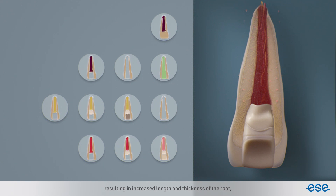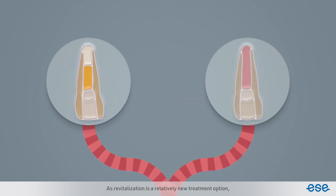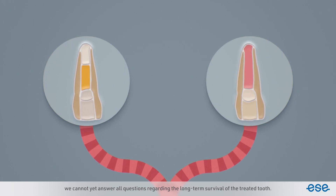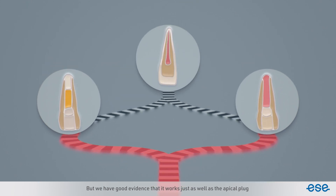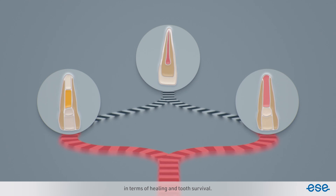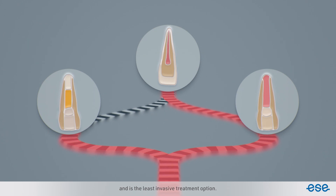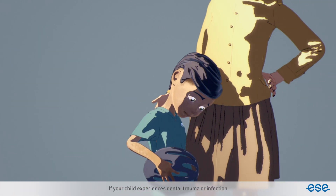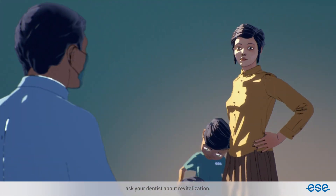Revitalization may result in increased length and thickness of the root and help the immature tooth become stronger. As it is a relatively new treatment option, we cannot yet answer all questions regarding the long-term survival of the treated tooth. But we have good evidence that it works just as well as the apical plug in terms of healing and tooth survival. The treatment is the least invasive treatment option. If your child experiences dental trauma or infection with subsequent loss of the dental pulp, ask your dentist about revitalization.